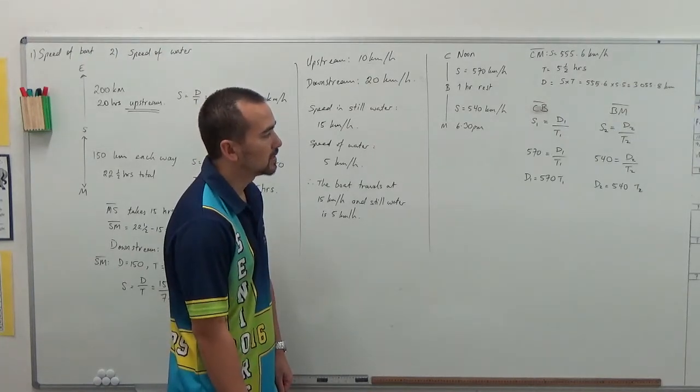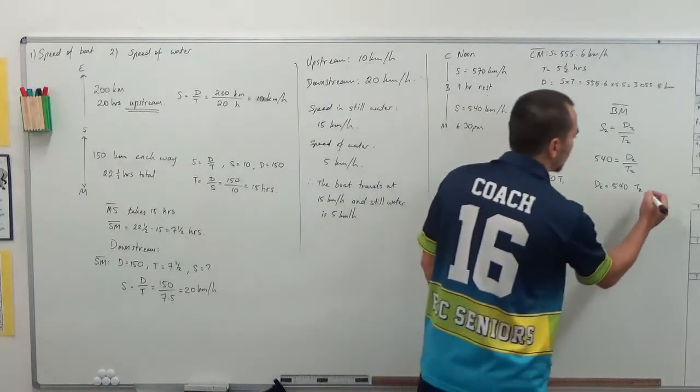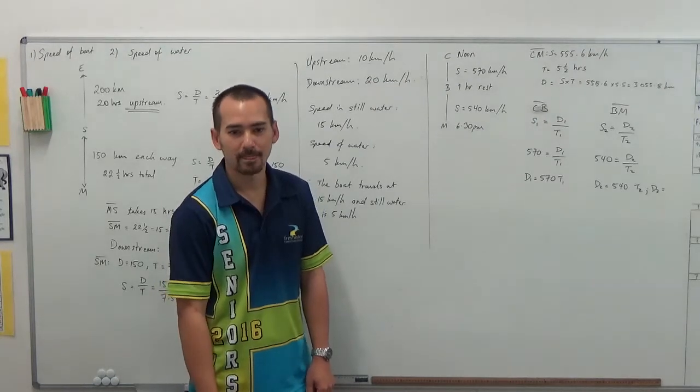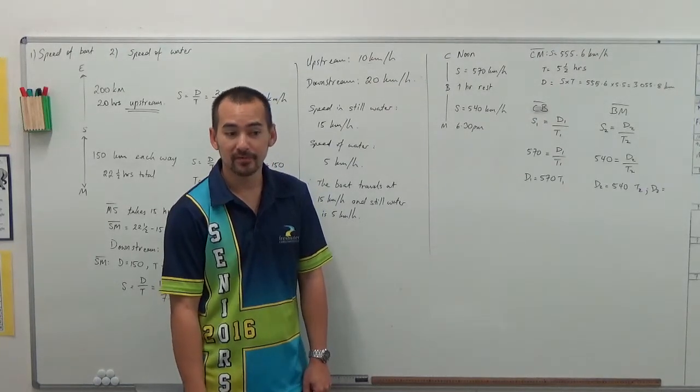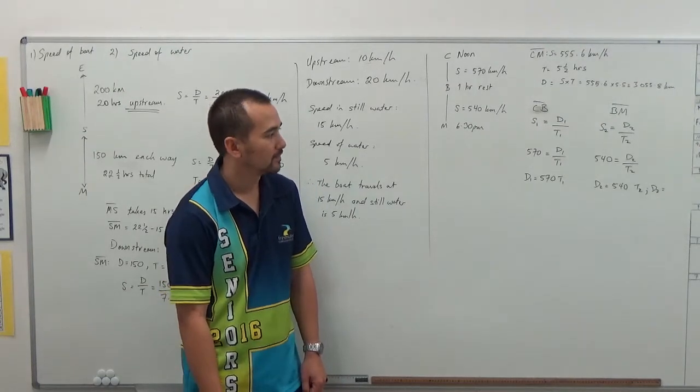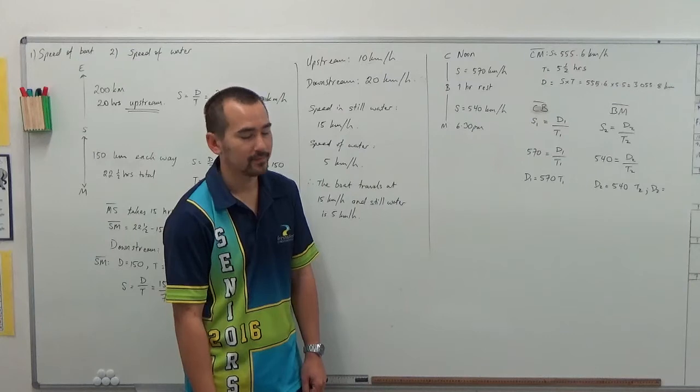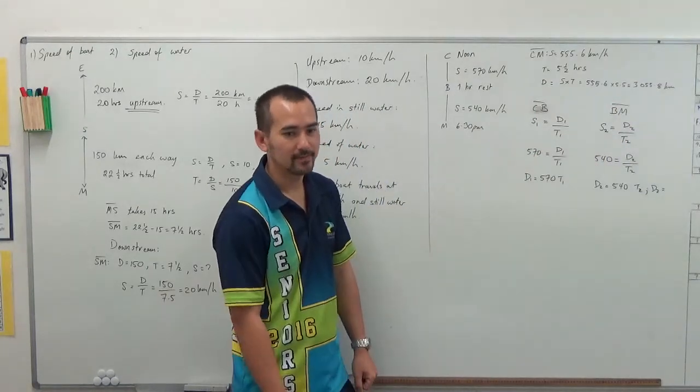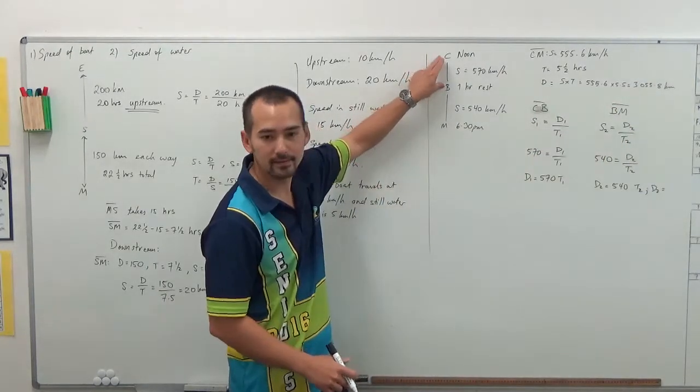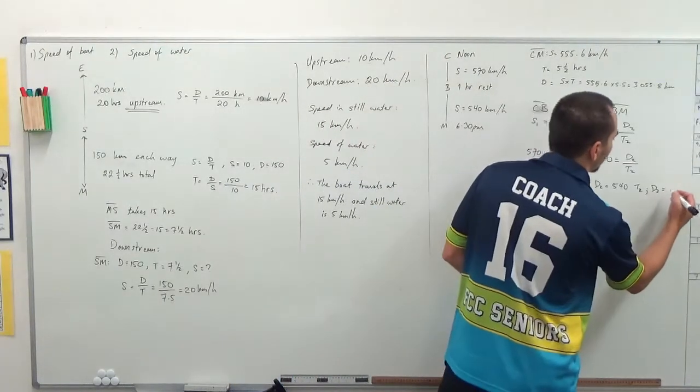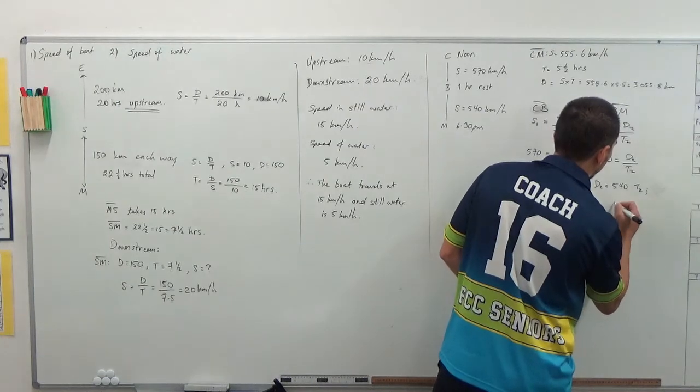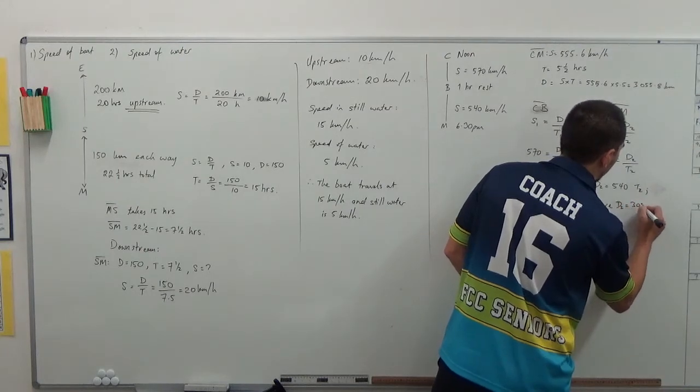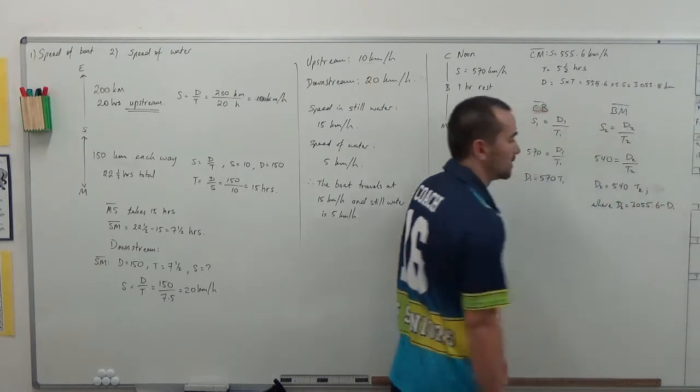And, couldn't we say that D2 is equal to, can we write D2 in terms of D1? If the overall distance was 3000, part of that is D1. So, D2 is really 3000... Oh, it makes sense now.